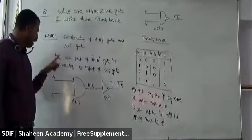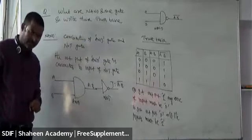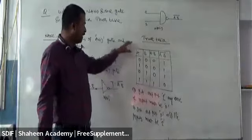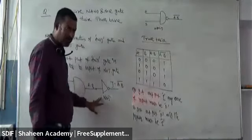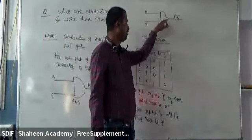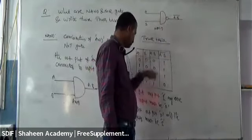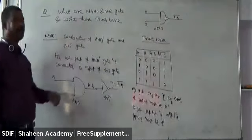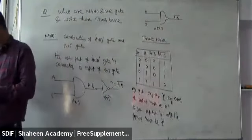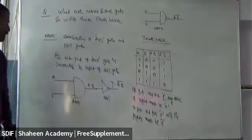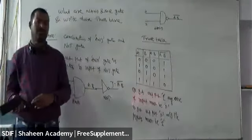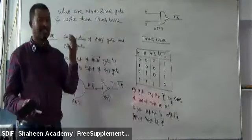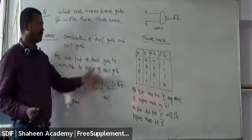Summary of NAND gate: it is a combination of AND gate and NOT gate. Output of AND gate is connected to input of NOT gate, giving A·B whole bar. For VSAQ, you can directly draw the truth table. For SAQ, write the definition, circuit symbol, and truth table. Now we will see the NOR gate.